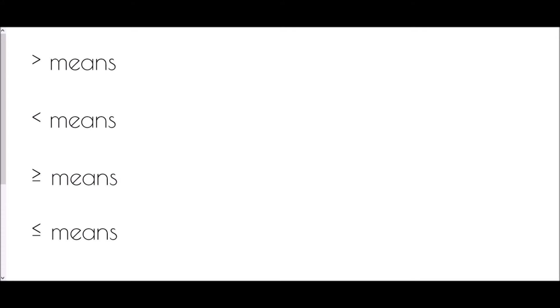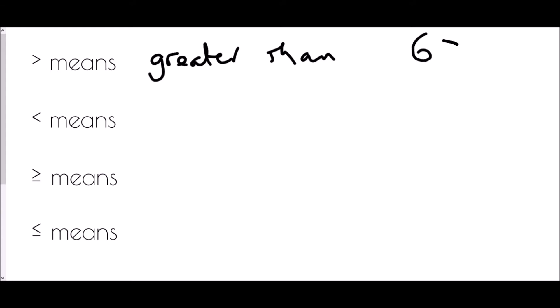To begin with, let's look at the symbols we're going to see during today's video on inequalities. We have the equal sign, which means whatever is on the left hand side is equal to the right hand side. An inequality means it may be equal but could also be more or less than the other side. An arrow pointing to the right means greater than — for example, six is greater than four. Pointing to the left means less than — four is less than six.